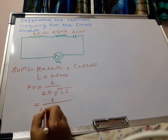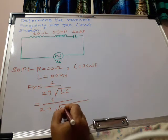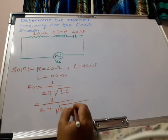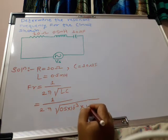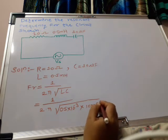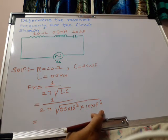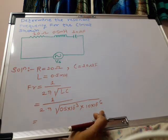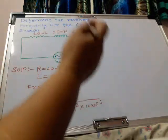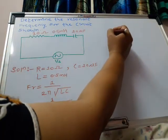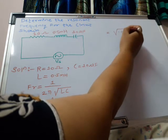Let us put all the values: 1 over 2π under root of L equals 0.5 millihenry, so we write 0.5 times 10 to the power minus 3, times C equals 10 times 10 to the power minus 6. Solving this: minus 3 plus minus 6 equals minus 9. Since this is in the denominator, when we transfer it to the numerator it becomes plus, giving us square root of 10 raised to power 9.